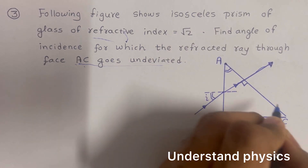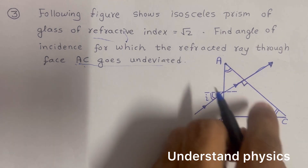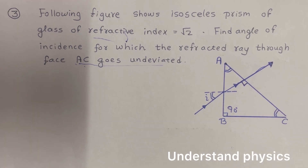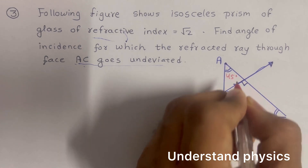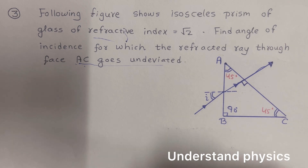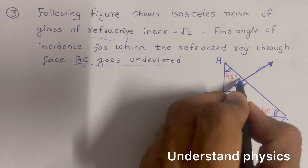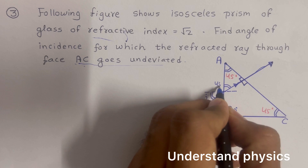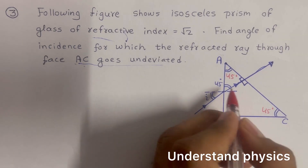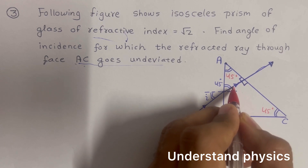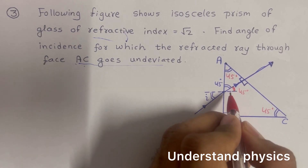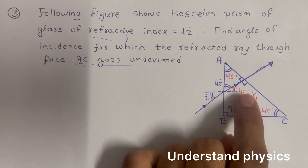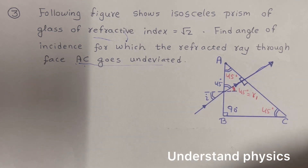Since it is an isosceles prism, both base angles are equal. The top angle is 90 degrees, so the sum of the two base angles is also 90 degrees, meaning each base angle is 45 degrees. Using simple geometry on the triangle, the refraction angle r1 works out to be 45 degrees.